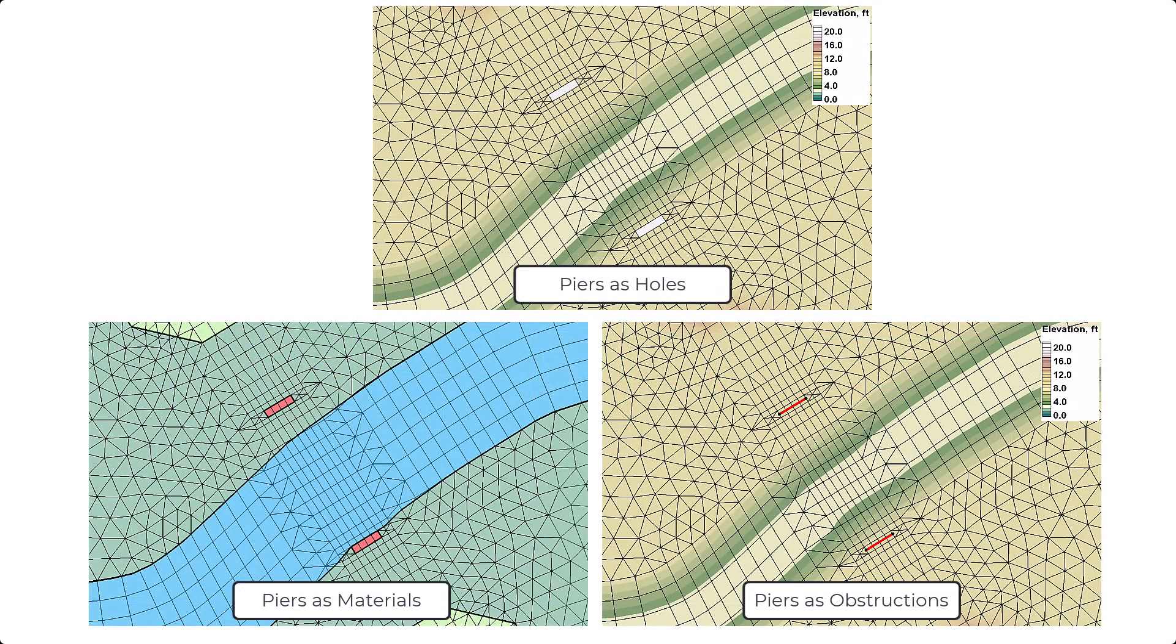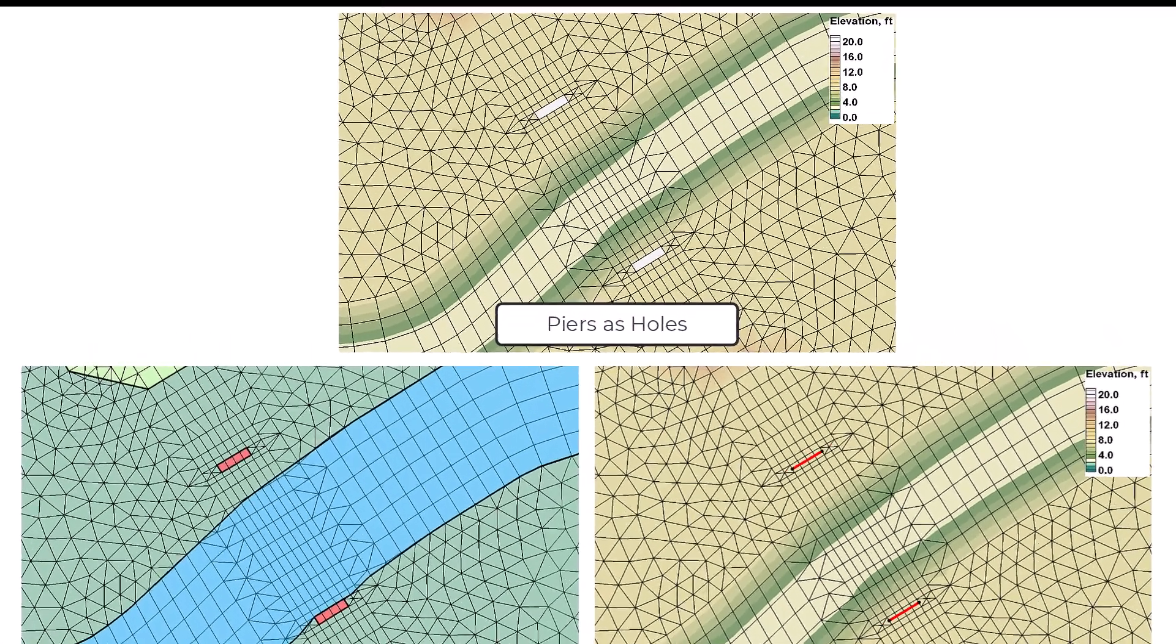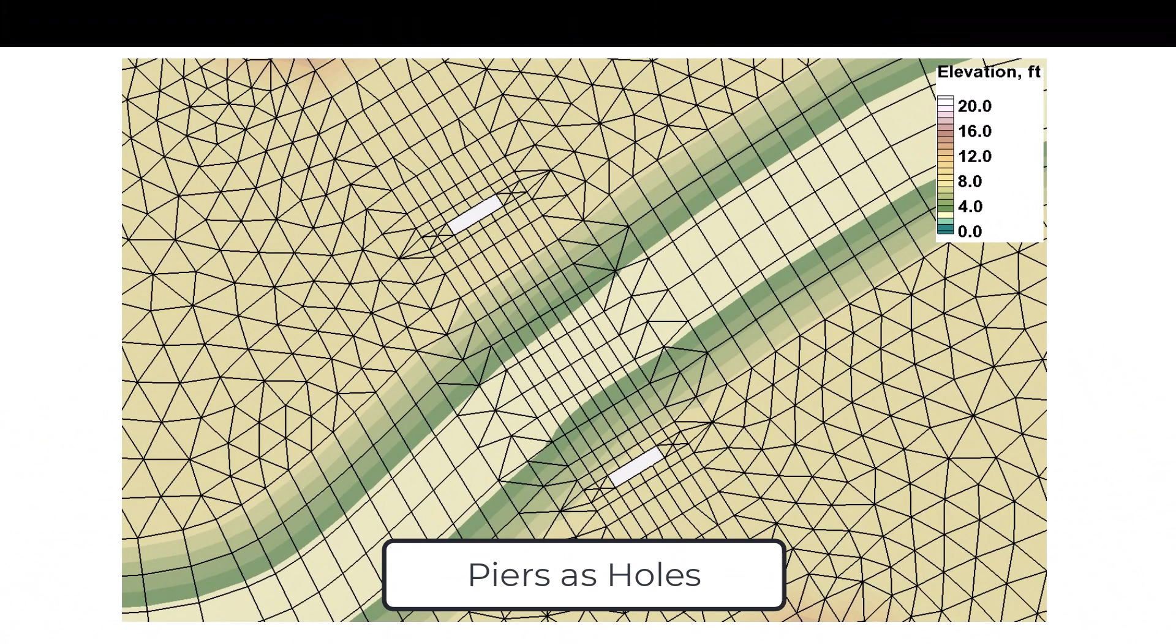There are three methods that can be used to represent bridge piers for an SRH model. The first method is to create a hole in the mesh to represent the length, width, and shape of the pier.